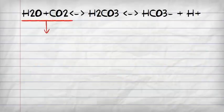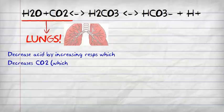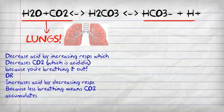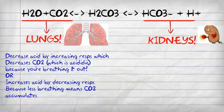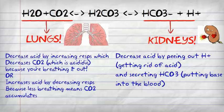Looking at that equation again — the left side represents the lungs, because the lungs decrease acid by increasing respiration, which decreases CO2, which is acidic, because you're breathing it out. On the other side, this represents the kidneys, because they decrease acid by excreting hydrogen ions and secreting bicarbonate — basically putting base into the blood.